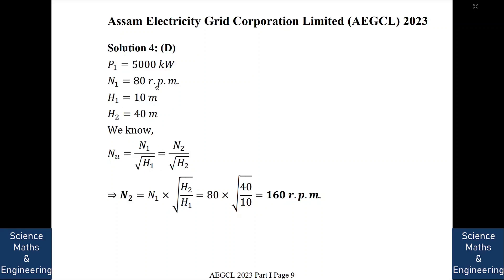we know unit speed is equal to N1 by root over H1 is equal to N2 by root over H2. Now N1 is given, H1 is given, H2 is given. So N2 would be equal to N1 into root over H2 by H1. So it is 80 into root over 40 by 10. So it is 160 RPM. So we will go to the next question.